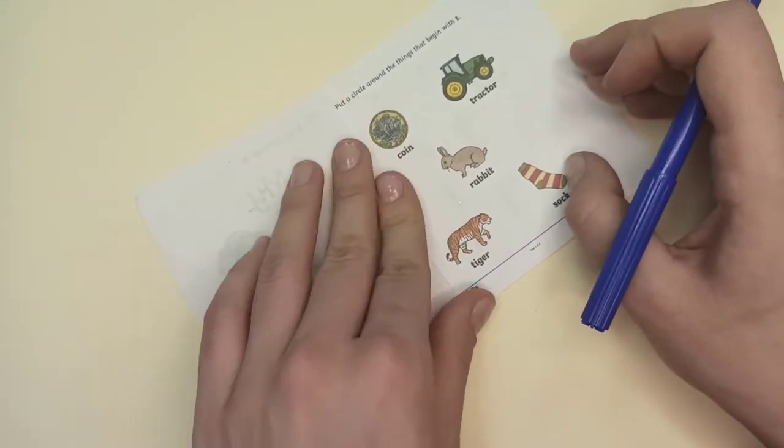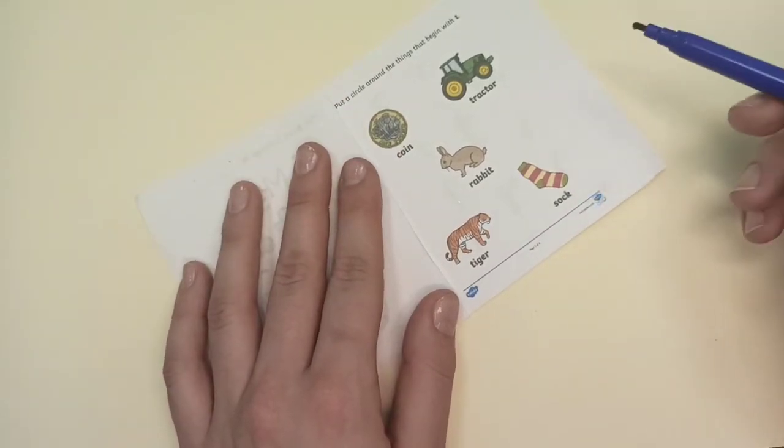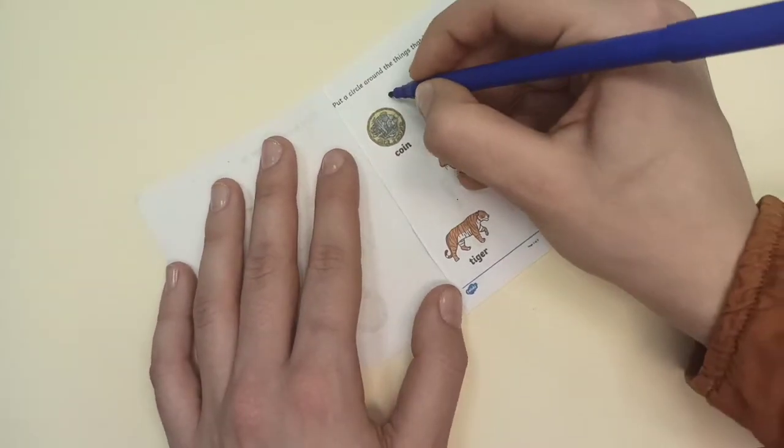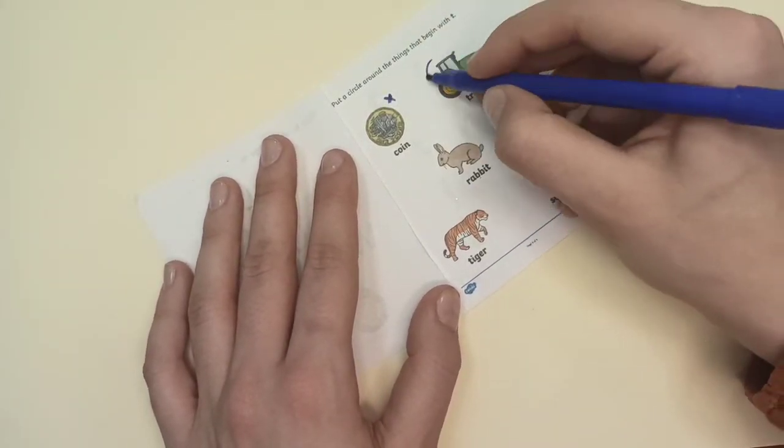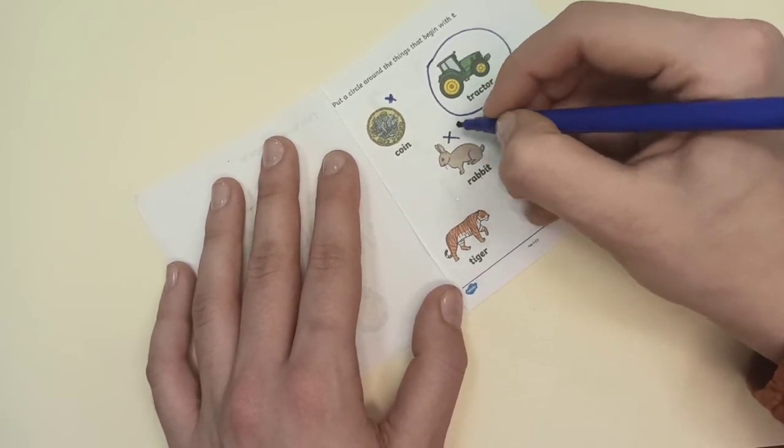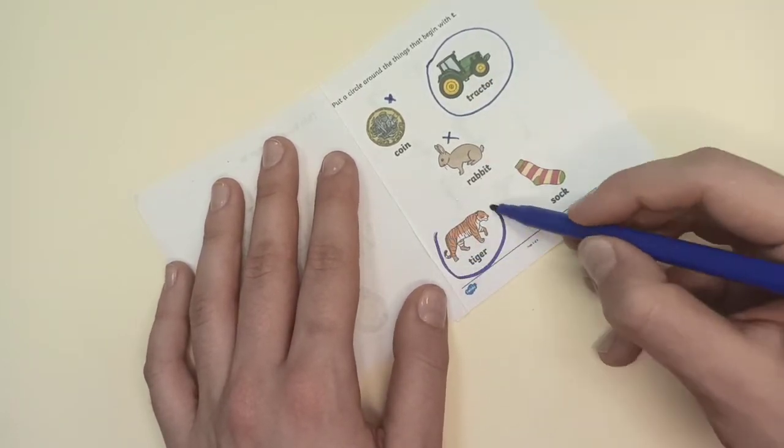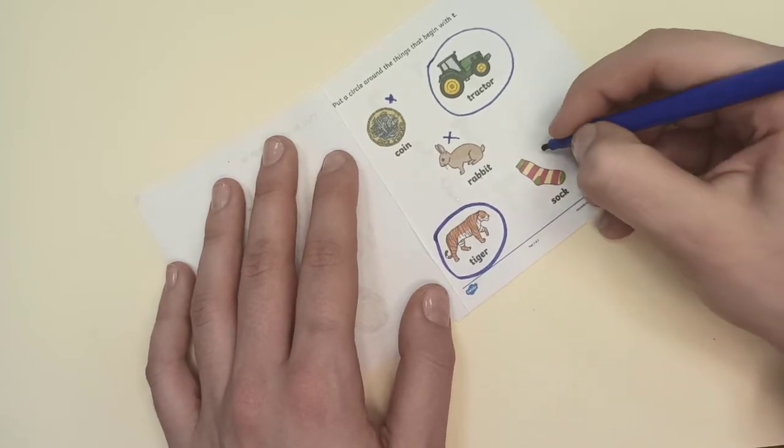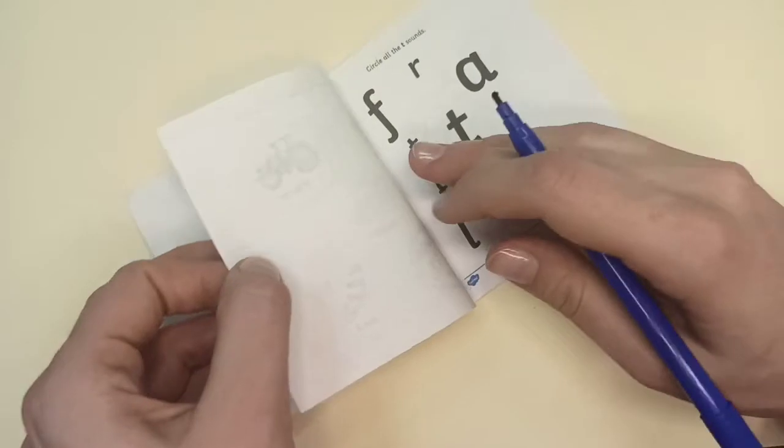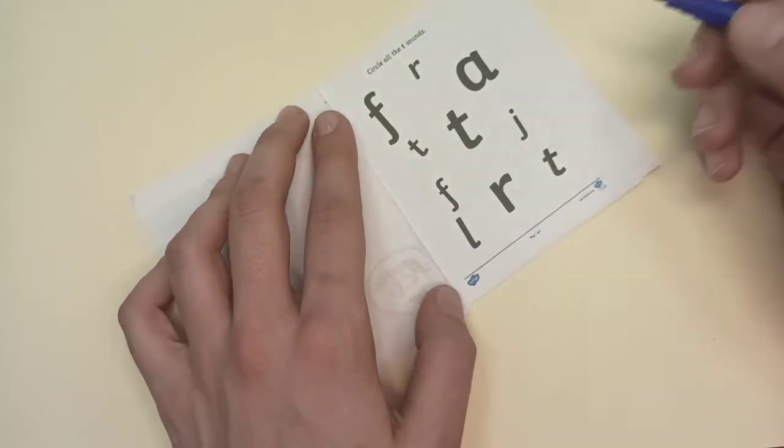Put a circle around things that begin with T. Coin. Tractor. Yes. Rabbit. Tiger. Yes. Sock.